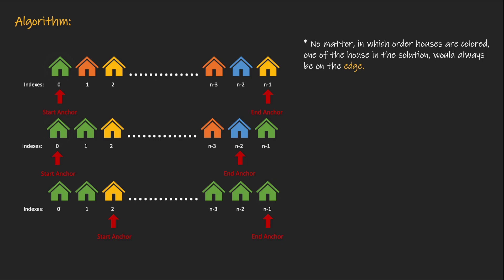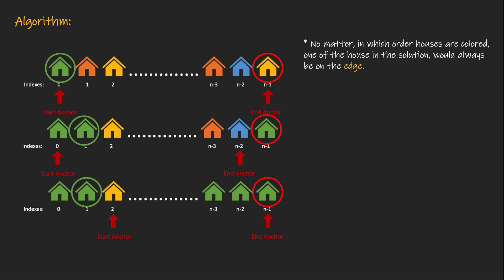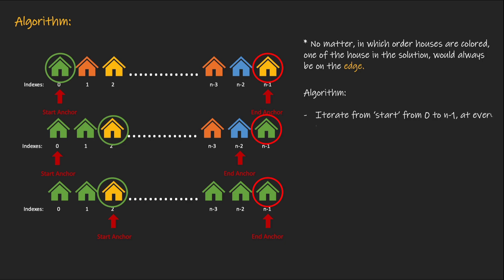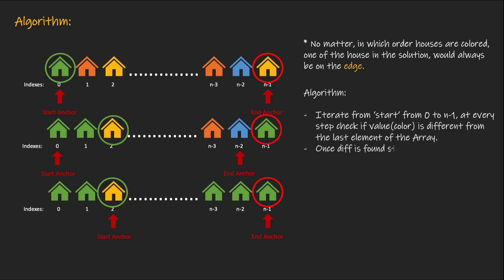To form the algorithm: if we only move from one side and keep the other side fixed at the edge, we can find the solution. We keep the right hand marker fixed at index n-1 and iterate only from index 0. If the colors are different, we're good; else we move to index 1 and compare with index n-1, then index 2, and so on. We iterate from 0 to n-1, and at every step check if the color differs from the last element. Once we find a difference, we store it as diff1 and break out of the loop.